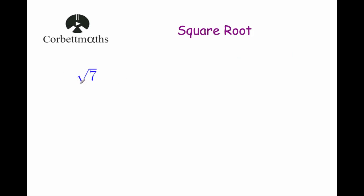Now let's look at a different question. This time it says the square root of 7. No whole number will times itself to give 7, because 3 times 3 is equal to 9 and 2 times 2 is equal to 4, so the square root of 7 will be somewhere in between 2 and 3.